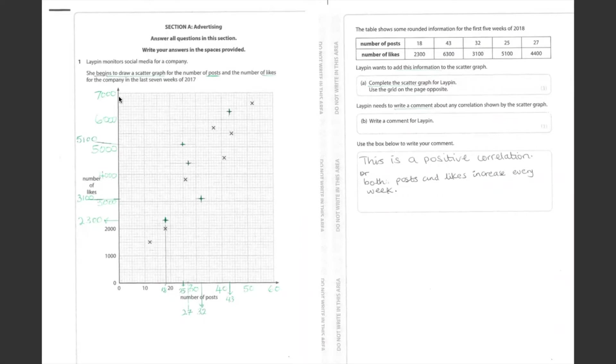First, we need to complete the scales on both axes. Then, we add the information from this table to the graph, which I have done in green crosses. We got five of them.